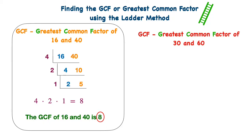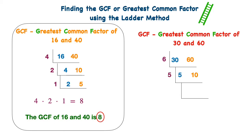Now let's find the greatest common factor of 30 and 60. I'm going to draw my L and place my numbers inside — 30 and 60. I think of a shared factor of both 30 and 60, so I'm thinking of 6. I continue down my ladder, and I know that 6 times 5 is 30 and 6 times 10 is 60. Then I look at 5 and 10, and I know they share a common factor of 5.